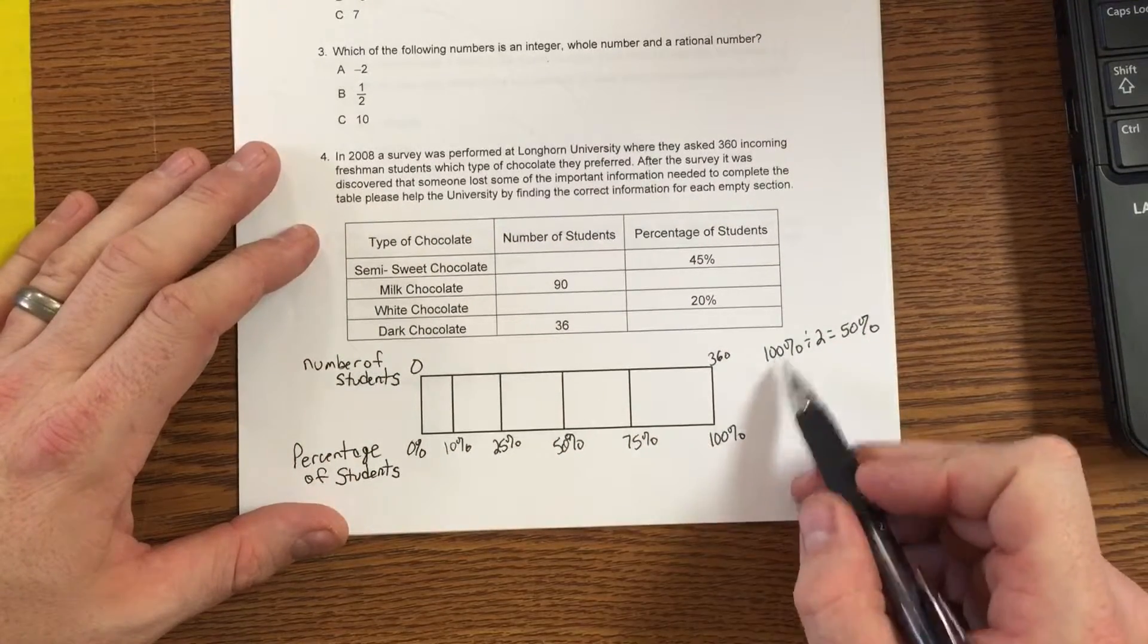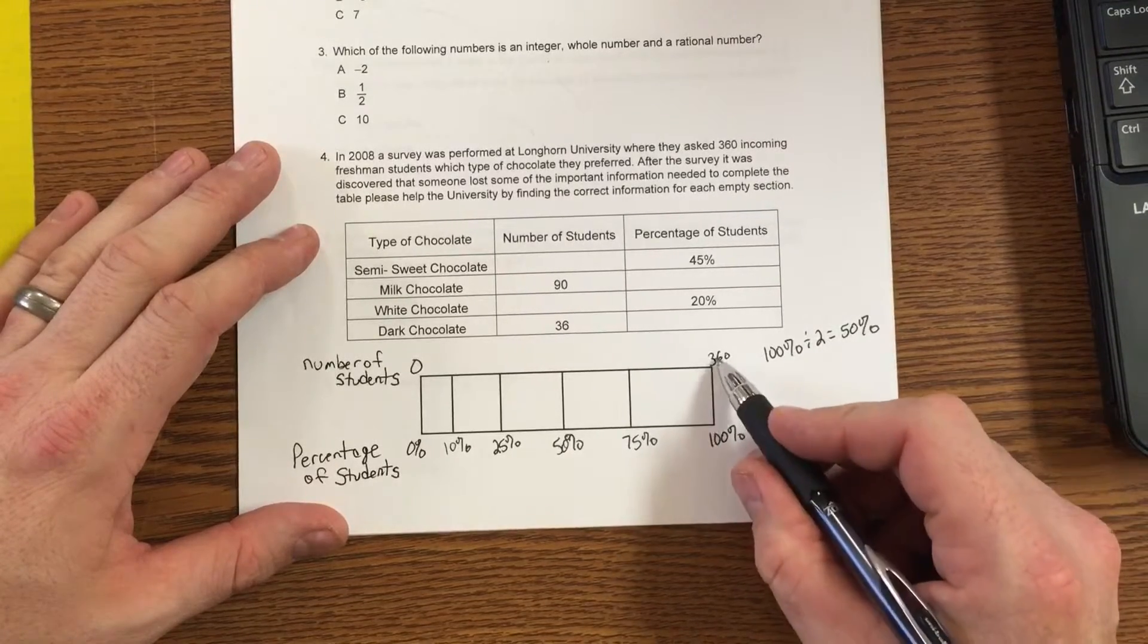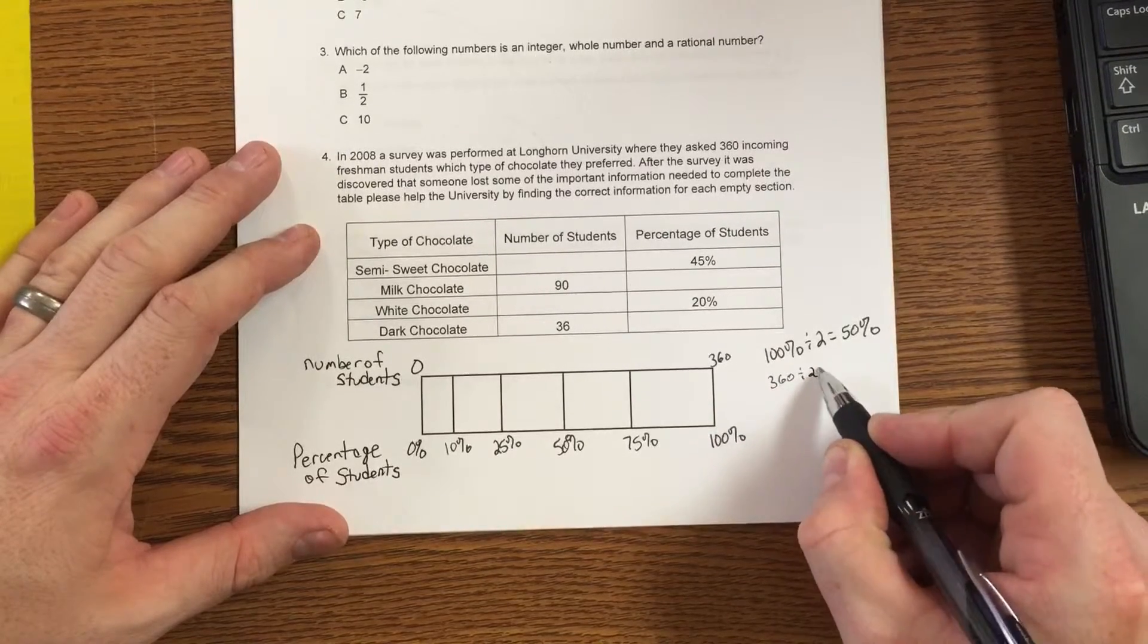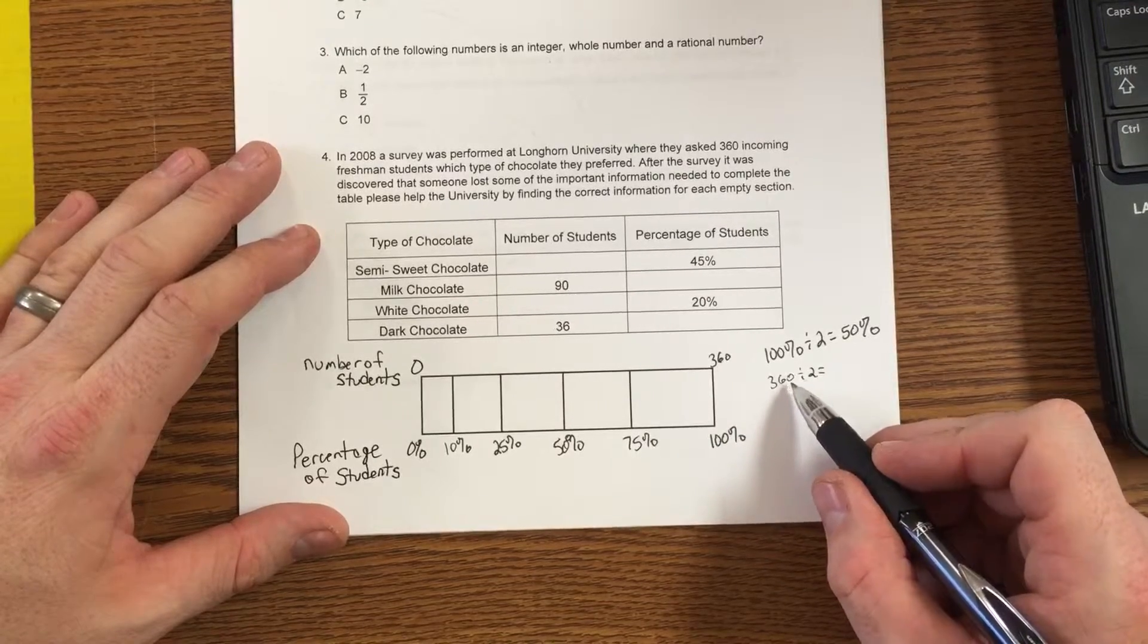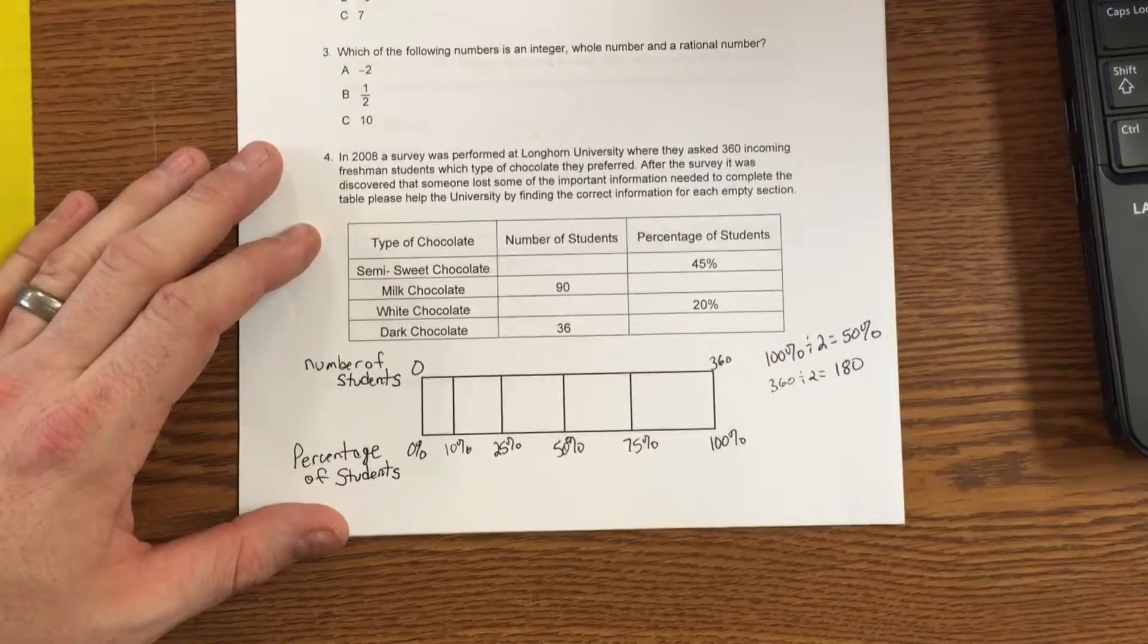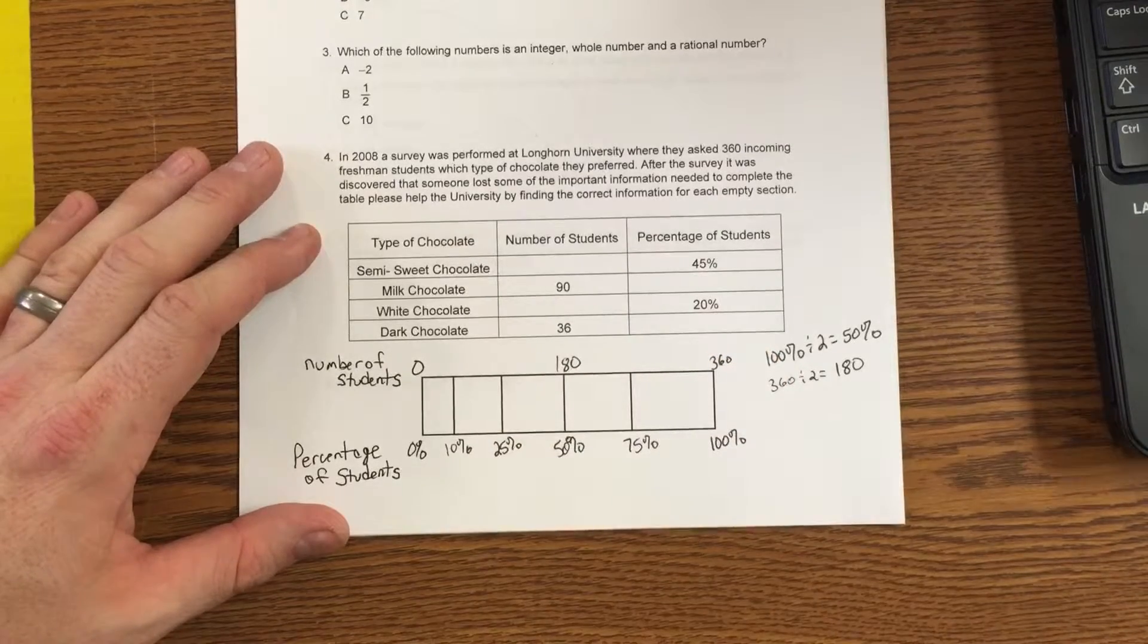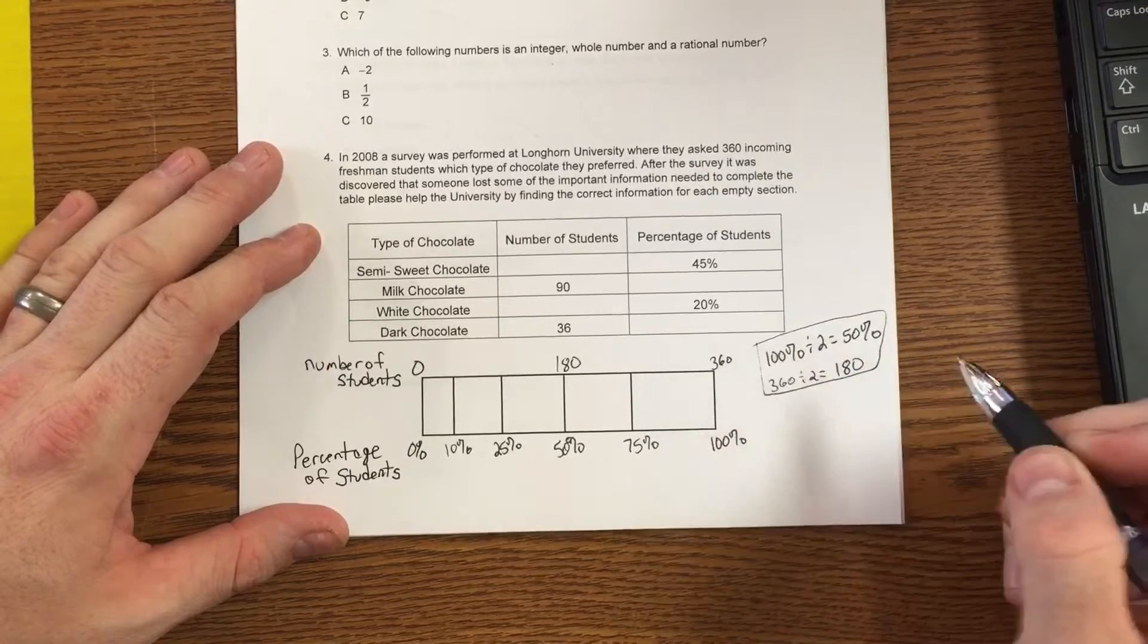Well, if I can take 100% and divide it by 2 and get 50%, then I should be able to take the value of 100% divided by 2 and land on 50%. Well, 360 divided by 2 is 180. All right, so I'll put the 180 right here. All right, now I know what 50% is. I'm done with that.